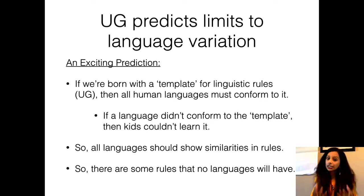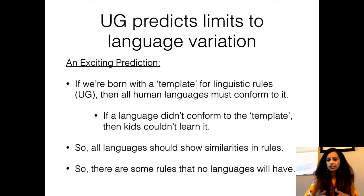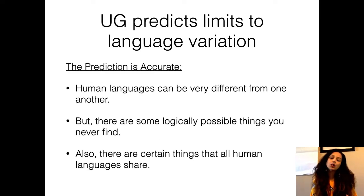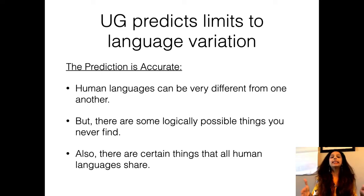This second kind of evidence has to do with the predictions about universal grammar with respect to the limits to language variation. This is an exciting prediction because if we are indeed born with a universal grammar template for learning a language, then we should see similarities across languages. There are rules for morphology, syntax, and semantics which we will be talking about later this semester, and there are some rules that no languages will have. Even though there are 7,000 human languages, there are some rules you will never find in any of them.